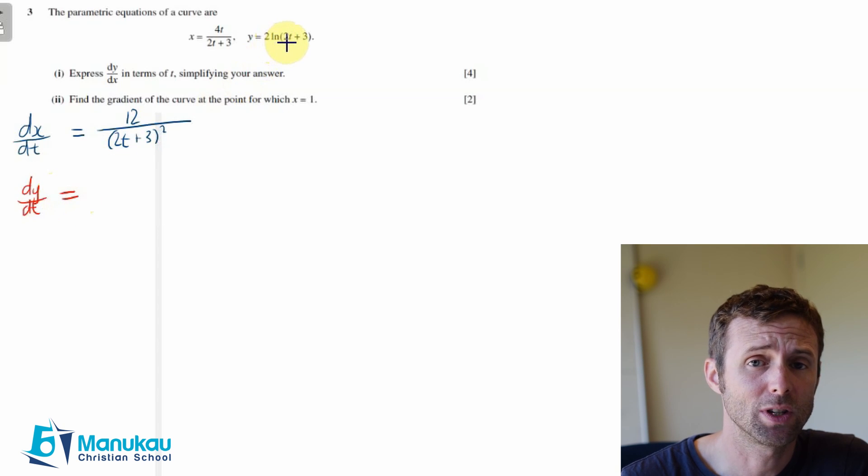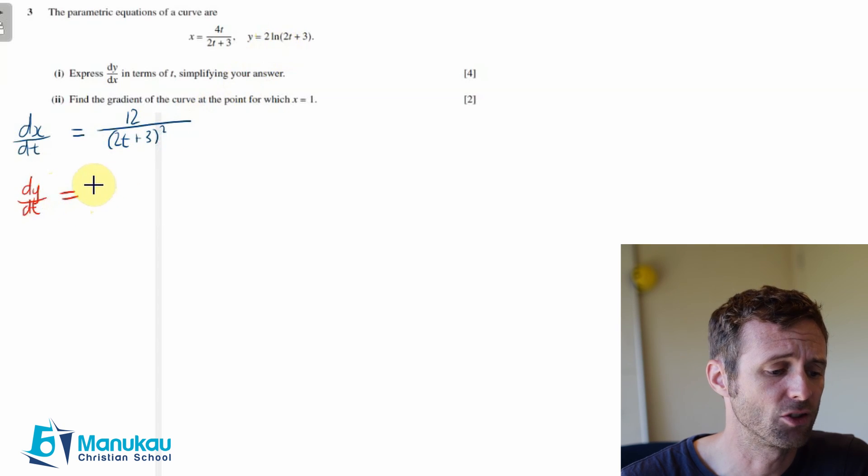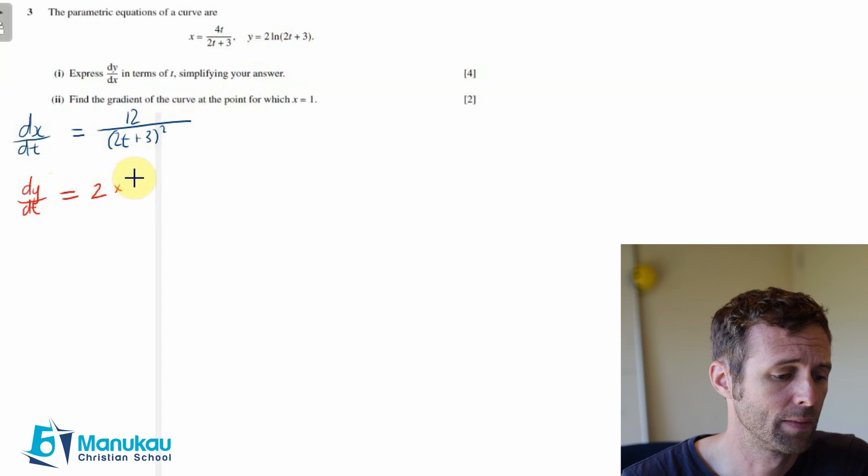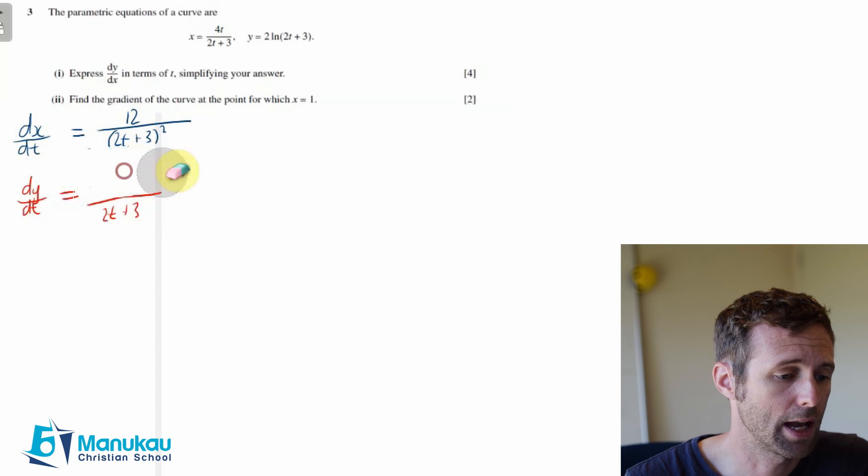Okay, so we've got y equals 2 ln(2t plus 3), so dy/dt is 2, this 2 here, multiplied by—we differentiate this inner bracket here—2, and then we put it all over 2t plus 3. Now hopefully you can see at this point we're just going to have a 4 on top, so it will be 4 over 2t plus 3.